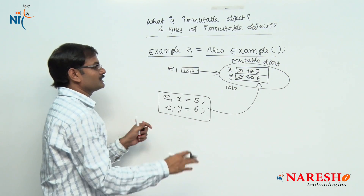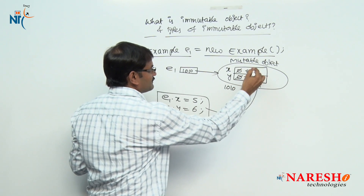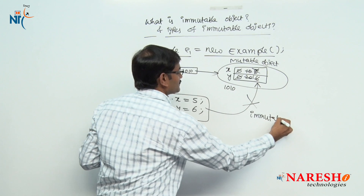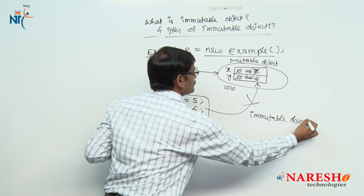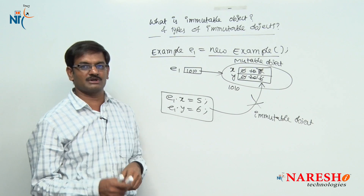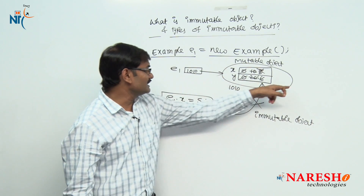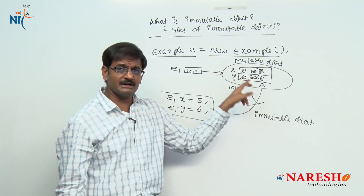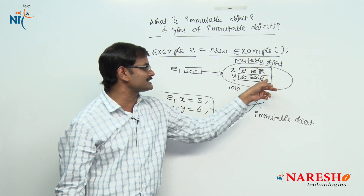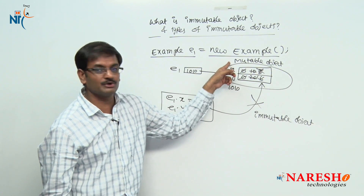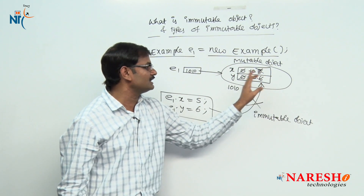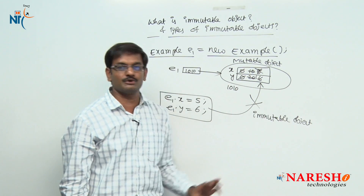If you are not allowing to modify — now values 5 and 6 are not going, not storing — then it is called an immutable object. So let us recollect: an object that we created, stored some values, and we are allowed to modify values and store the result in the same object, then it is called a mutable object. If we are not allowed to modify the data, then that is called an immutable object. This is the basic idea.